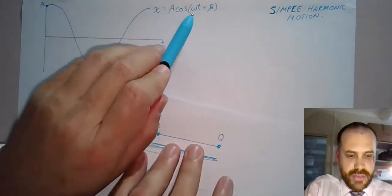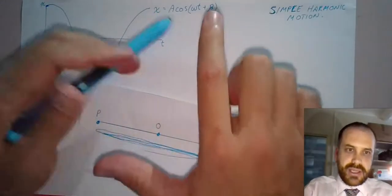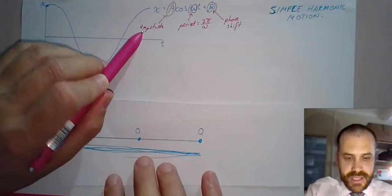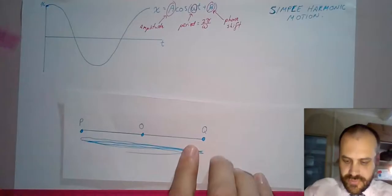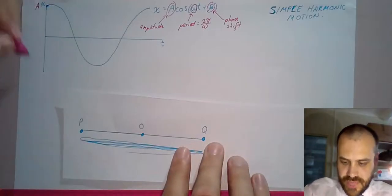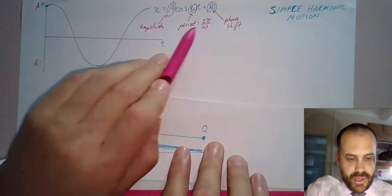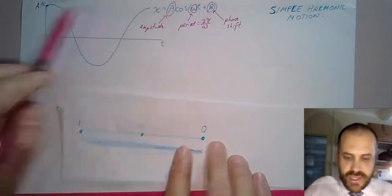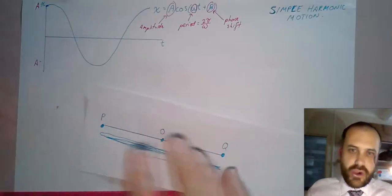The equation is displacement equals a cos(ωt + β). This a value is the amplitude, the distance of the oscillation itself. The period is equal to 2π over omega. And this beta tells you your phase shift. This has a phase shift of 0, but it could be shifted over a little bit.